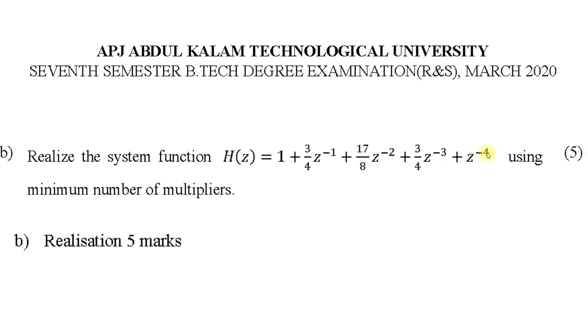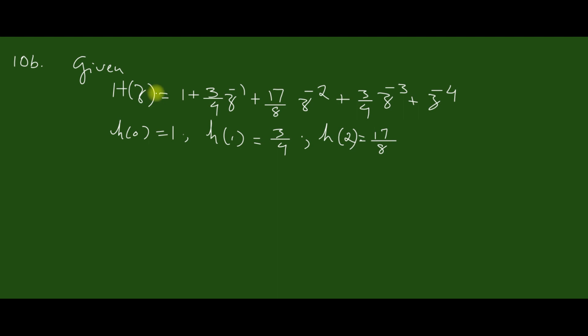If it is z to minus 5, it will be an even system with order plus 1 terms. Let us draw the structure. Given H(z) equal to the system function, from which we can easily get H(0) = 1, H(1) = 3/4, then H(2) = 17/8. By inspection, it is evident that H(z) is a linear phase FIR filter.